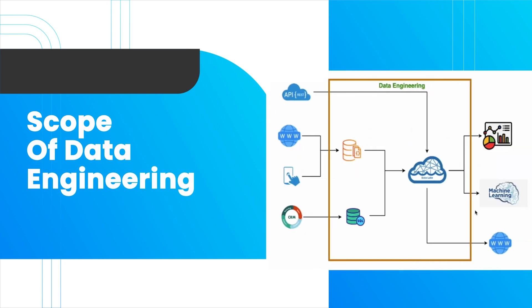In terms of the scope of data engineering: any company can have web-based platforms, CRM, app-based platforms, or they may be pulling data from APIs. All of this data comes into one common place — a data lake. In data engineering, you always hear the term ETL: Extract data from source databases, Transform it in the data lake, and Load it to the target layer. This target layer serves downstream applications such as reporting, machine learning, or data transferred back to websites. The orange box you see here represents the entire data engineering scope.